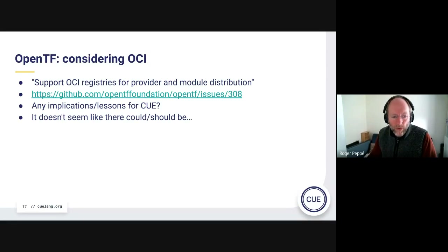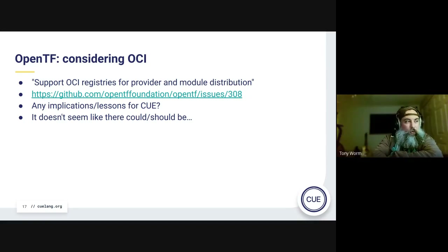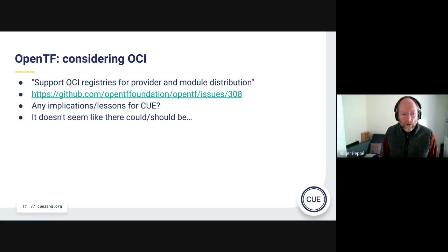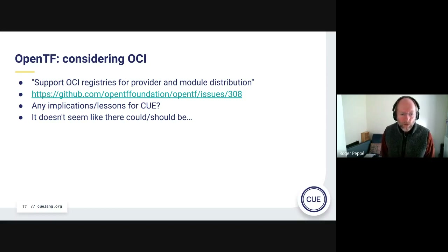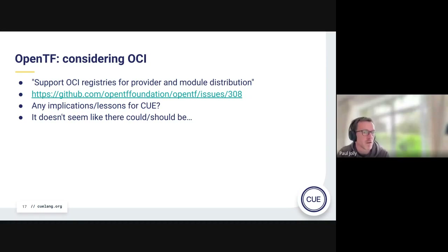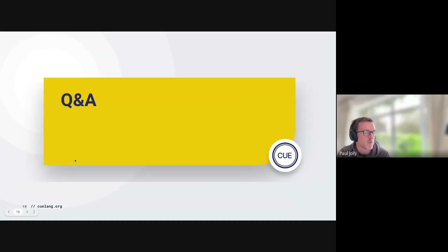Roger wonders whether this is a module-level thing or more a package-level thing. Tony was thinking module-level, but package-level is also interesting — you could imagine something providing something Hof-specific but also something relevant to some other ecosystem. Roger defers to whether this is an attribute thing versus an attestation thing, guessing it's more an attribute of the module or package.